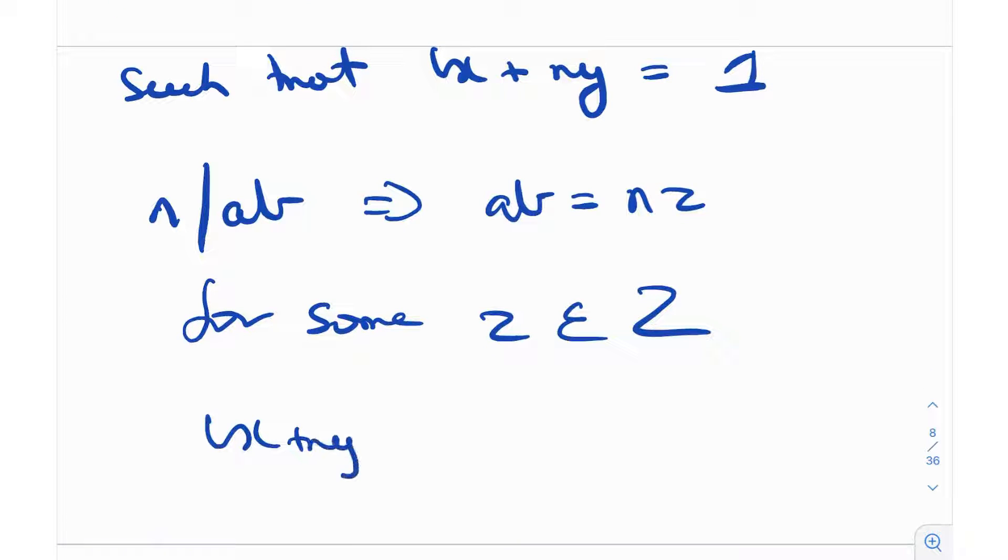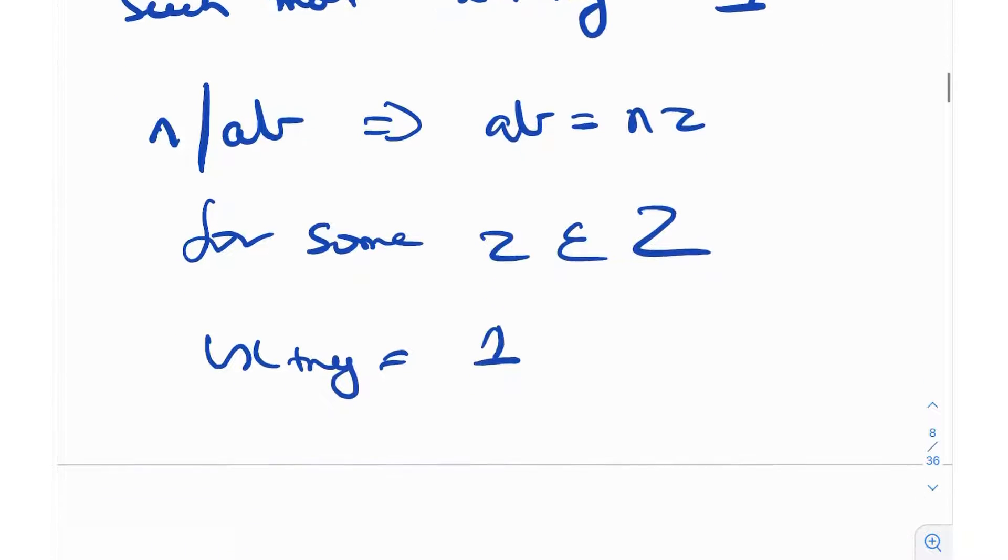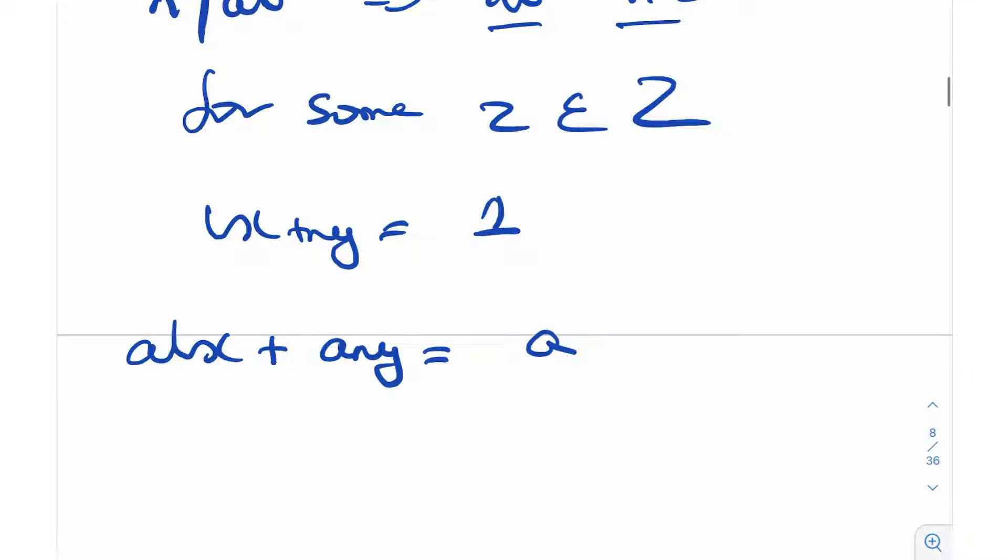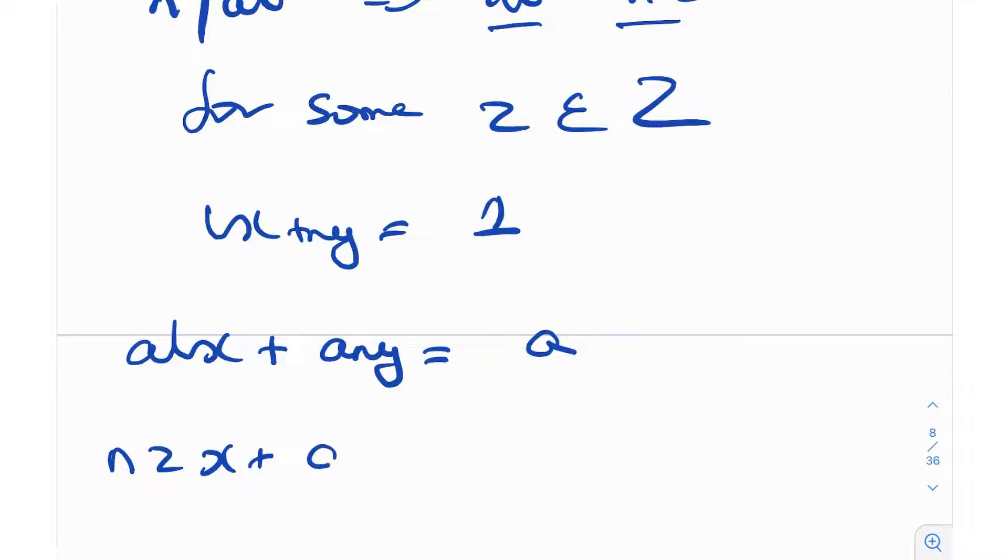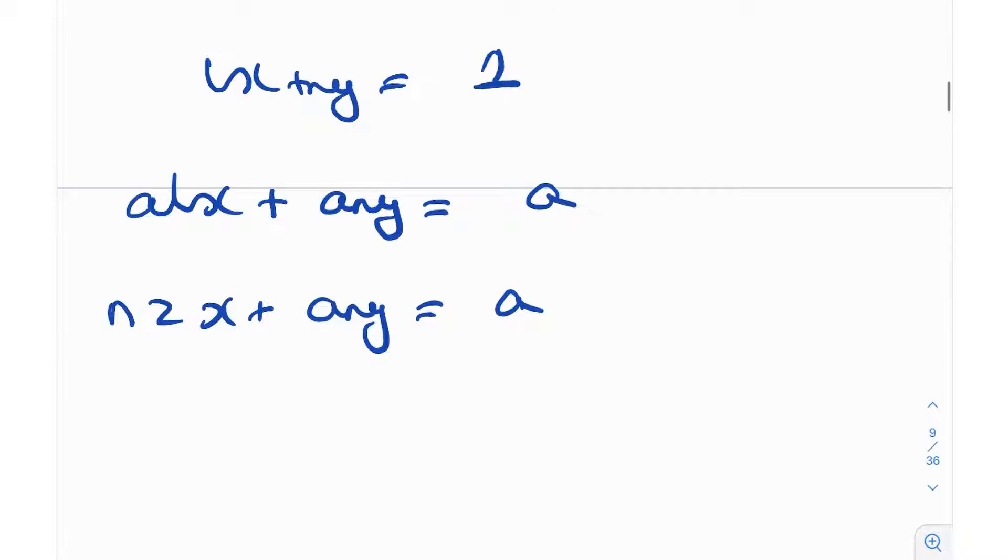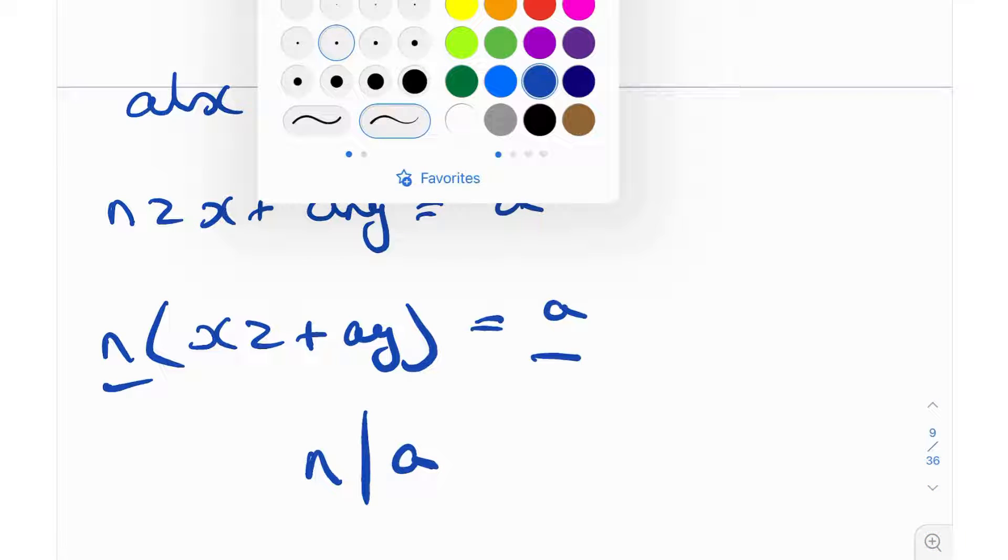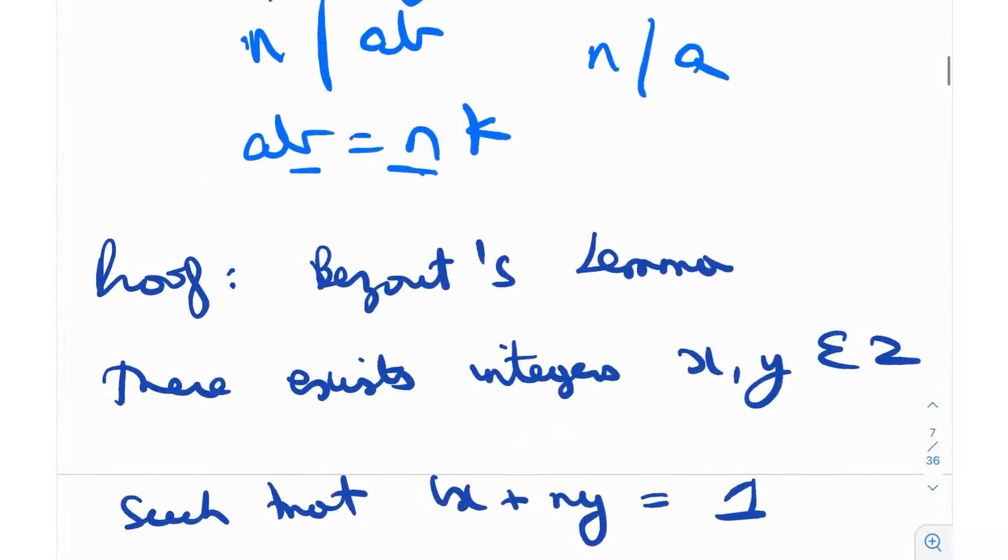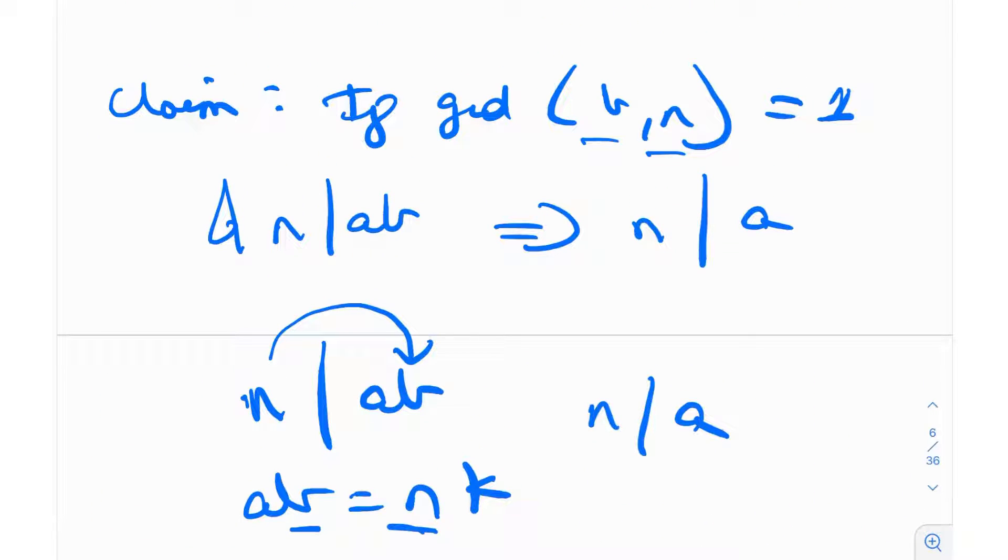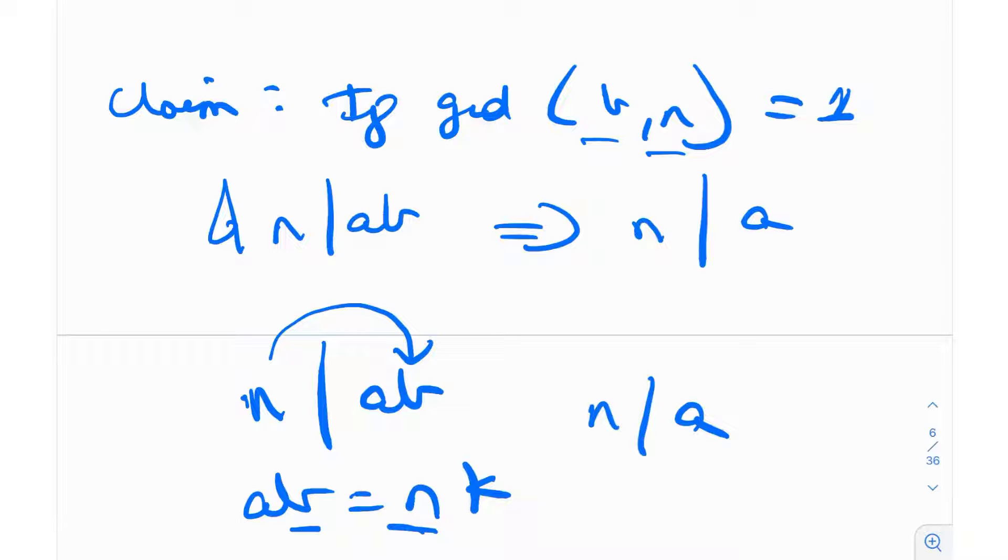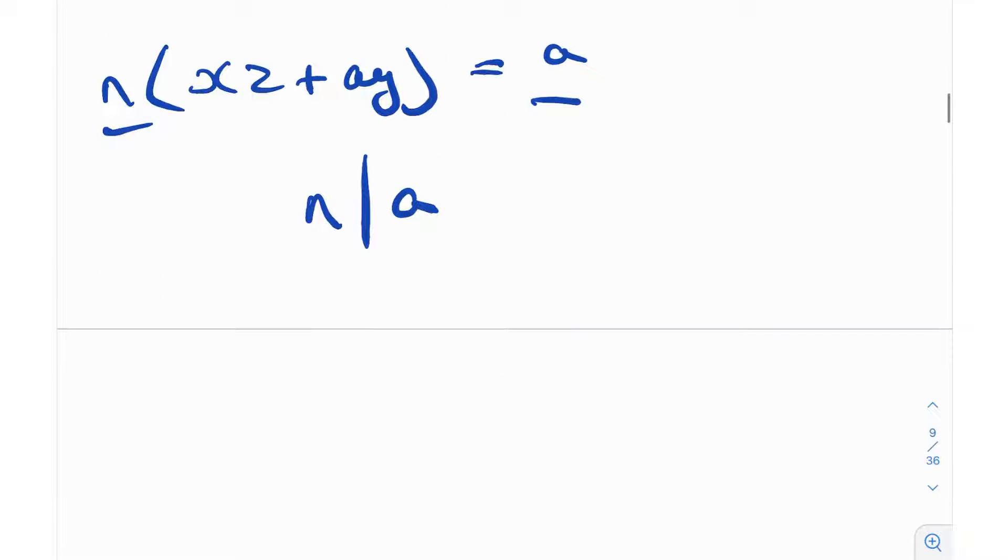We have bx + ny = 1. Multiply both sides by a, so you get abx + any = a. Since ab = nz, replace that to get nzx + any = a. Take n common: n(zx + ay) = a. From here it's clear that n divides a. Therefore this claim is proven: if gcd(b, n) = 1 and n divides ab, then n divides a. I proved this because we're going to need it somewhere down the line.